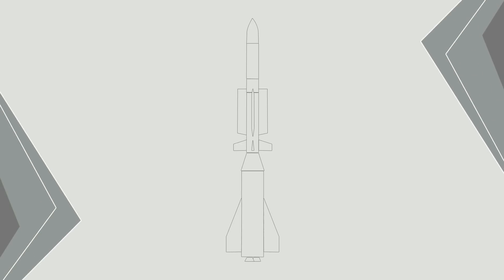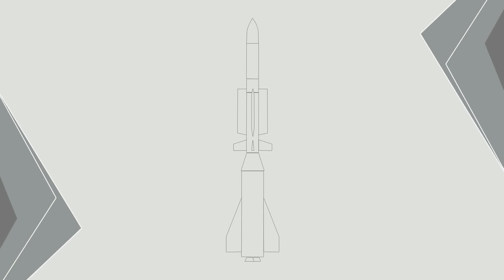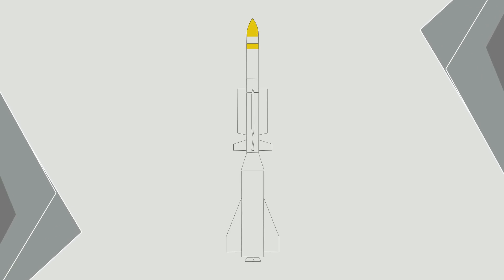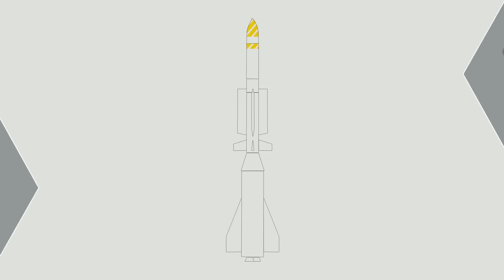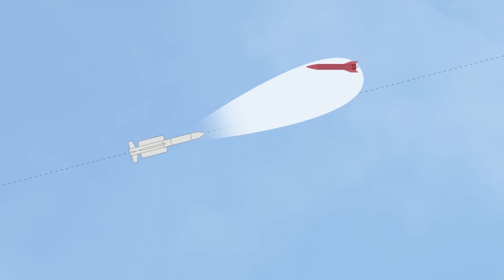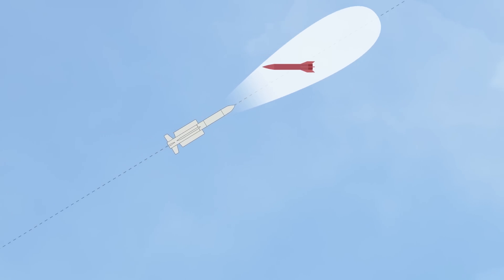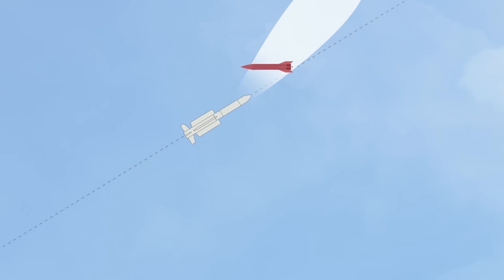An active seeker is like a mini radar located in the missile nosecone. It is used to locate the target and provide data allowing the missile to correct its path to achieve interception.